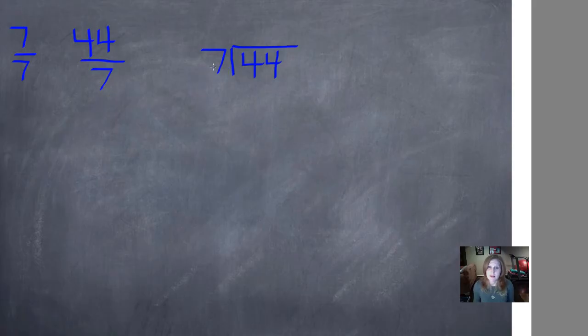7 goes into 4, it doesn't. 7 goes into 44 six whole times. 7 times 6 is 42, and 44 minus 42 is 2.